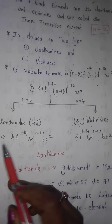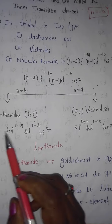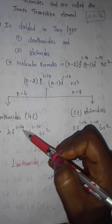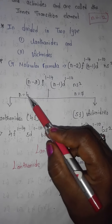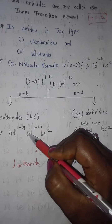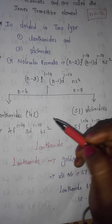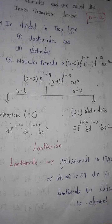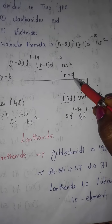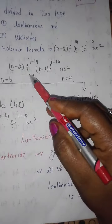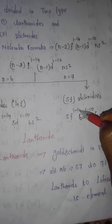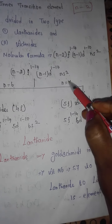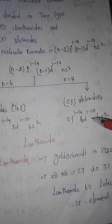Following the general formula for lanthanides with N=6: 4F 1 to 14, then 5D 1 to 10 electrons filled in this orbital, then 6s2. Similarly for actinides with N=7: 5F 1 to 14 electrons filled, then 6D 1 to 10, and 7s2.